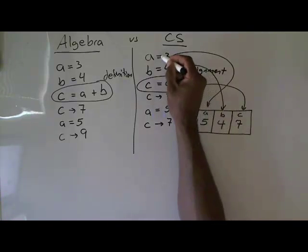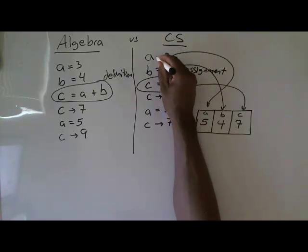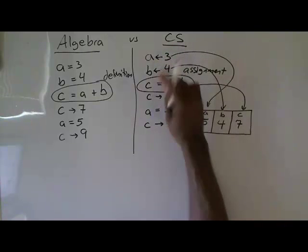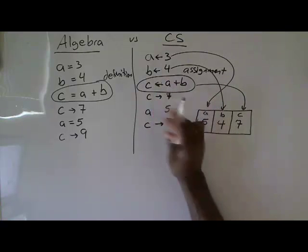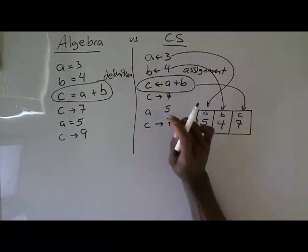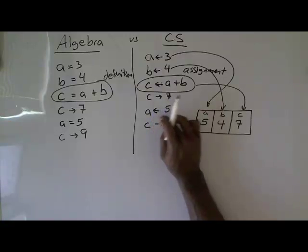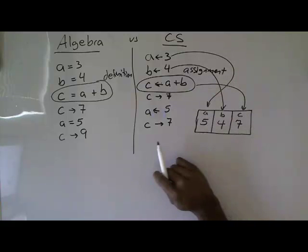The better way to read this is: memory location A gets 3, memory location B gets 4, memory location C gets A plus B — which means C equals 7. Then if I say A gets 5, since I have not made another assignment to C, C remains 7, which is what it was assigned. This is an assignment, not a definition.